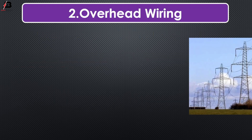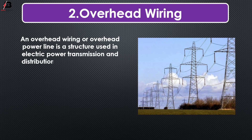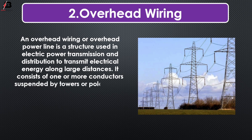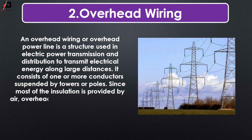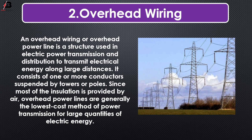Overhead wiring, or overhead power line, is a structure used in electric power transmission and distribution to transmit electrical energy along large distances. It consists of one or more conductors suspended by towers or poles. Since most of the insulation is provided by air, overhead power lines are generally the lowest cost method of power transmission for large quantities of electric energy.